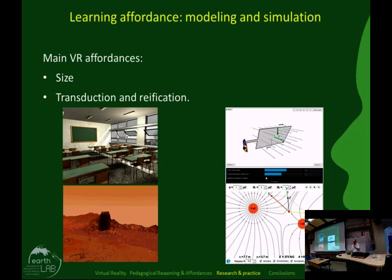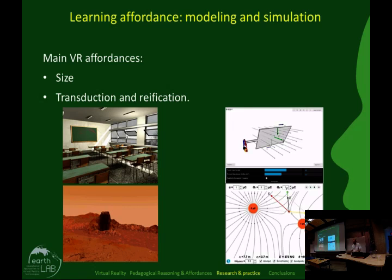To show how transduction and reification work, here is a two-dimensional view of a learning object where I can have one or two electrical charges, positive or negative, and see their interaction. I can put another charge and see the forces and intensity of the electric field — things that are not visible in reality, but we use them to teach physics. I can put my charge somewhere and study what happens.